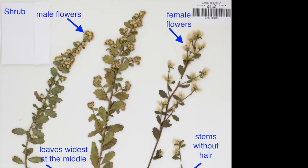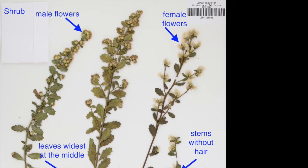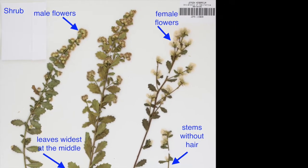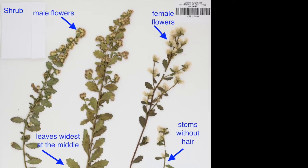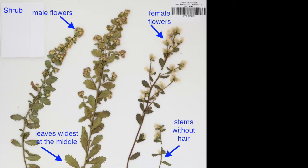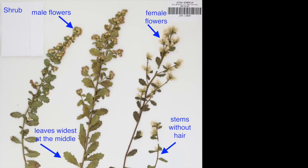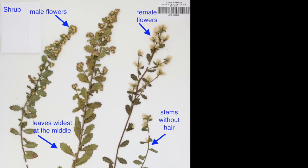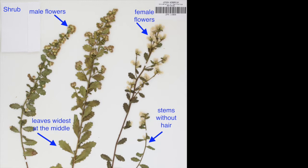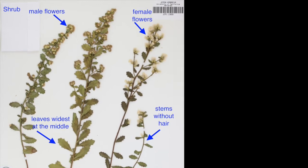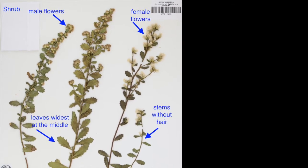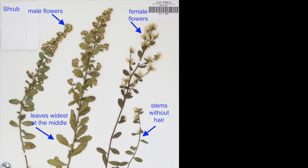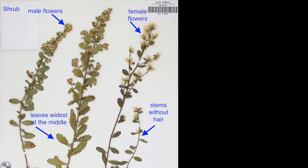Coyote brush is dioecious — male and female flowers occur on separate individual plants. Both male and female flowers are whitish in color but are not showy. The leaves are widest at the middle and taper toward the base. Stems are without hair.